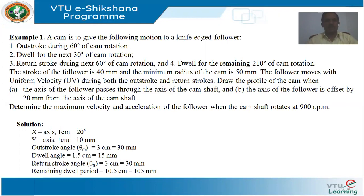The stroke of the follower is 40 millimeters and the minimum radius of the cam is 50 millimeters. The follower moves with uniform velocity during both the outstroke and return strokes. Draw the profile of the cam when (a) the axis of the follower passes through the axis of the camshaft, and (b) the axis of the follower is offset by 20 millimeters from the axis of the camshaft. Determine the maximum velocity and acceleration of the follower when the cam rotates at 900 rpm.